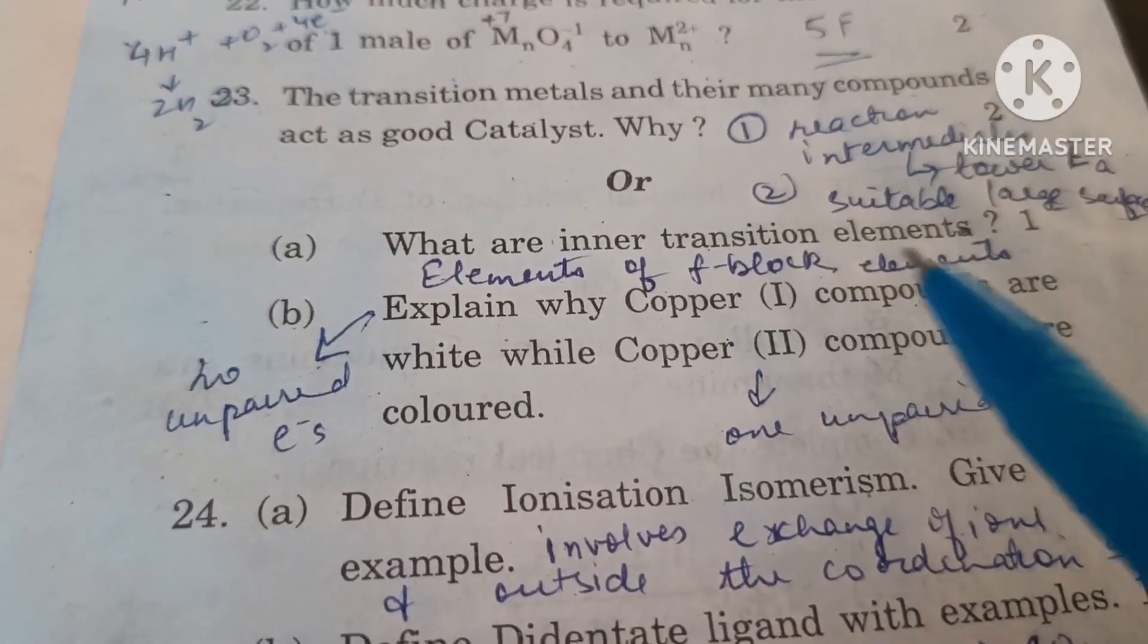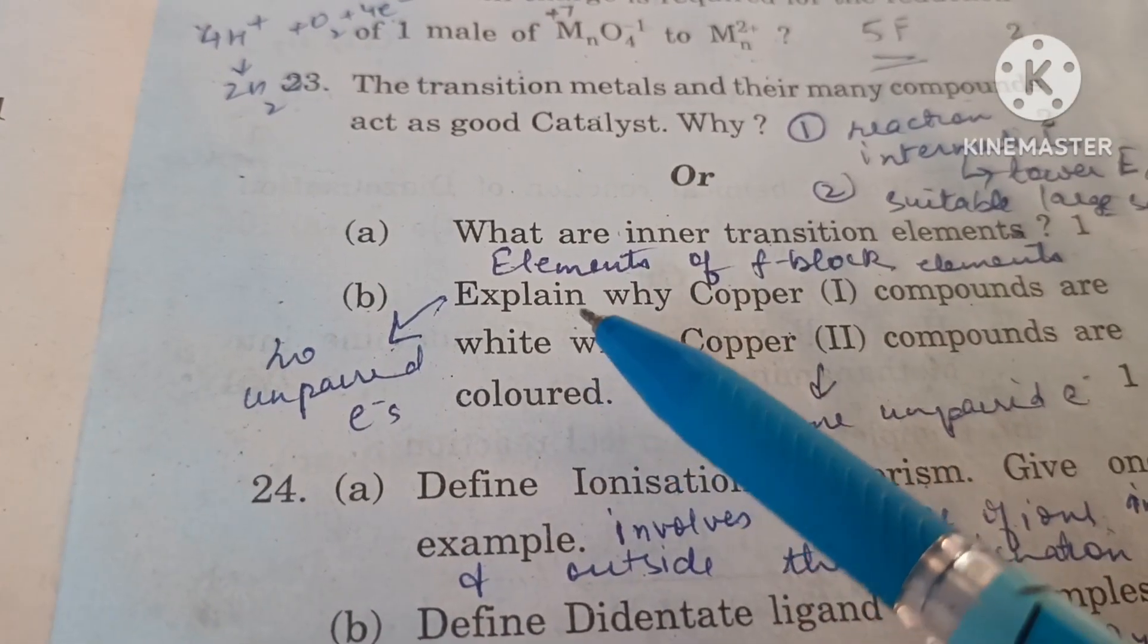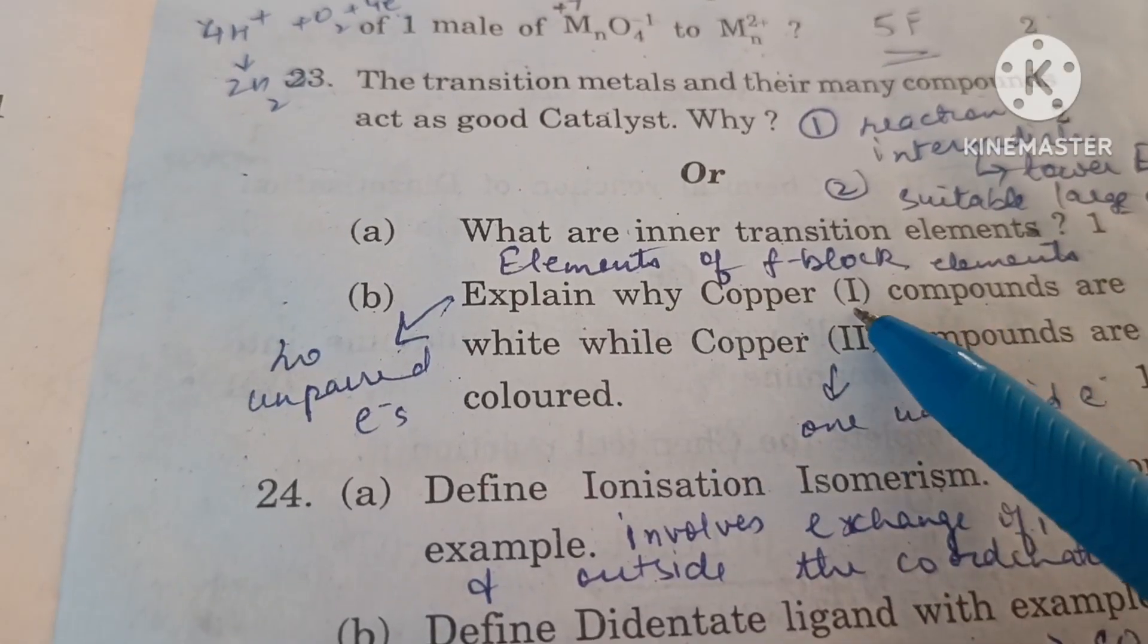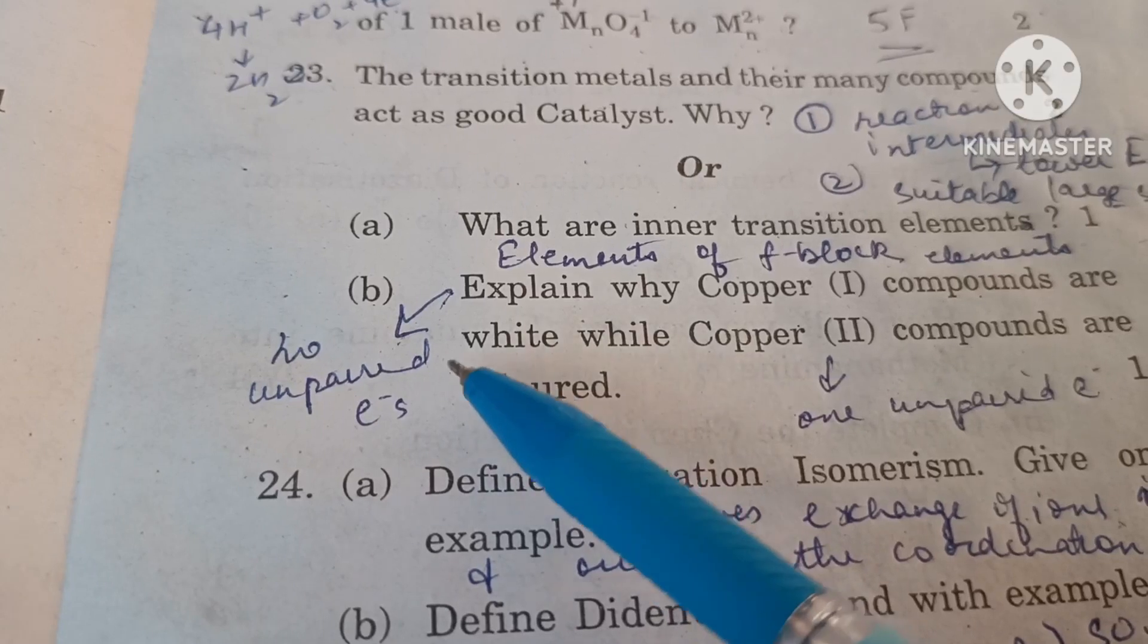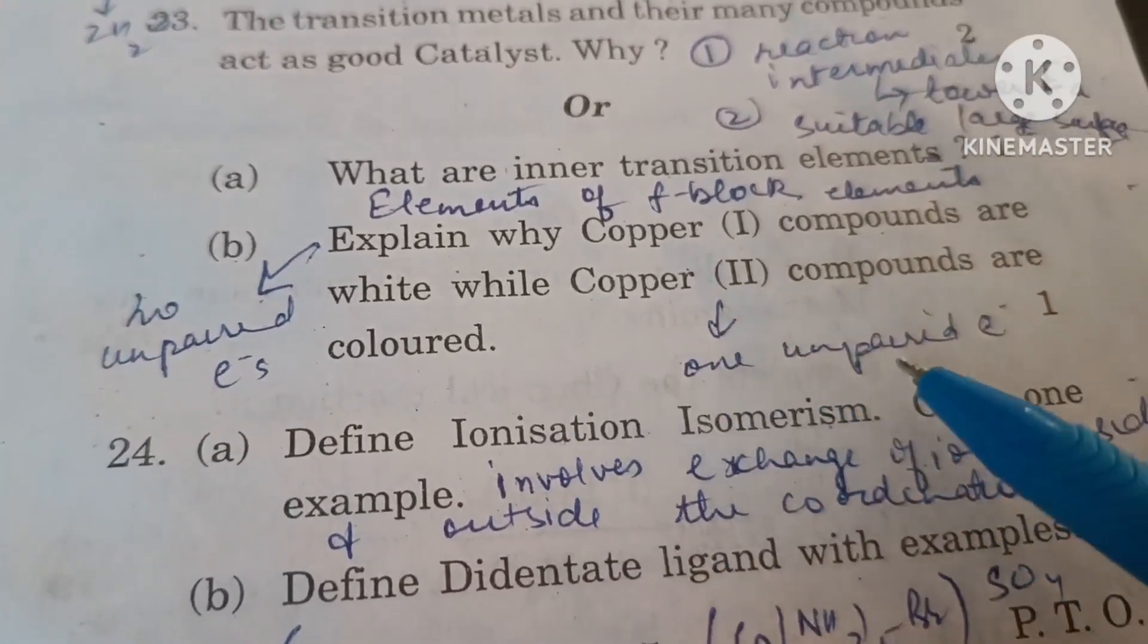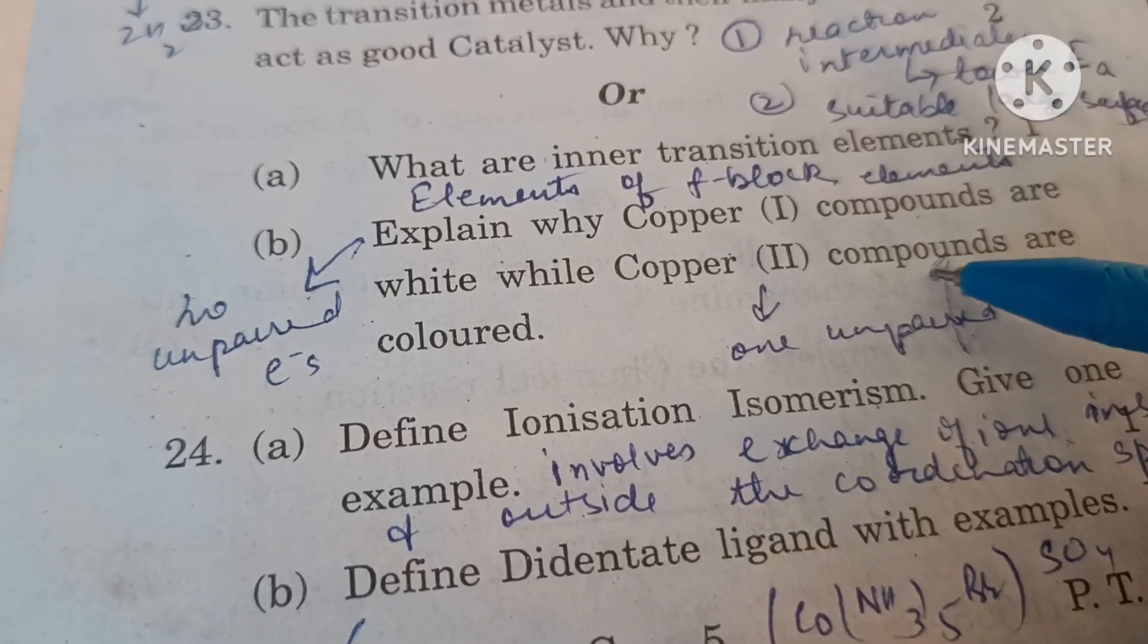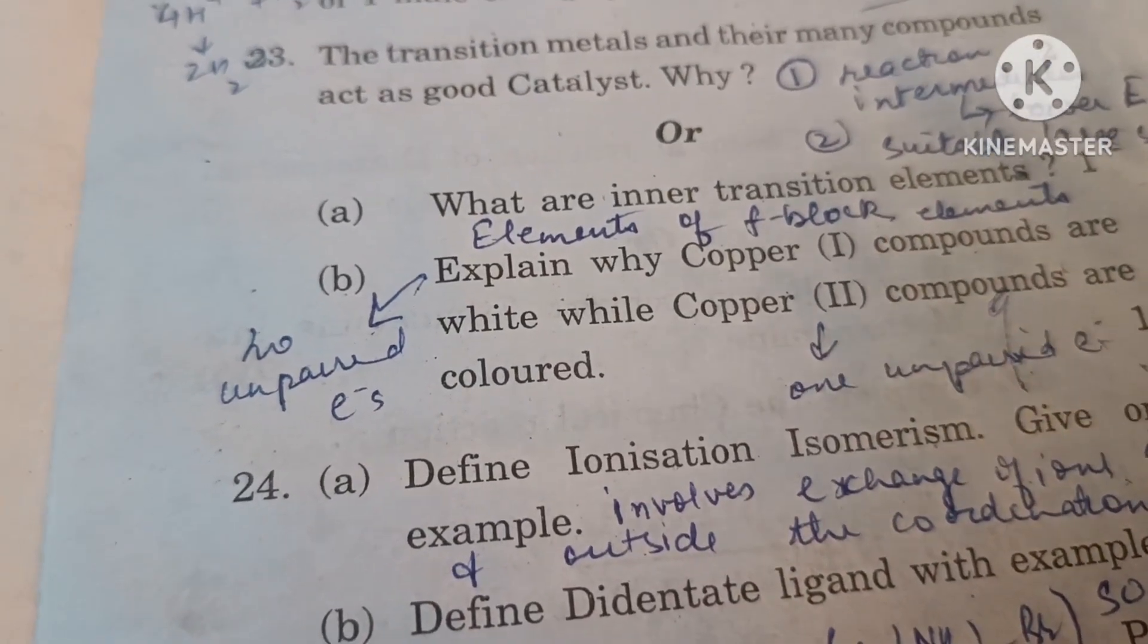Explain why copper(I) compounds are white. Because they are diamagnetic in nature, they have fully filled d10 subshell in +1 oxidation state, so there is no chance of jumping of electron to higher energy, so they are white in color. But copper(II) compounds are paramagnetic, they have one unpaired electron. This electron can jump to higher energy level and as a result give color to the compound.